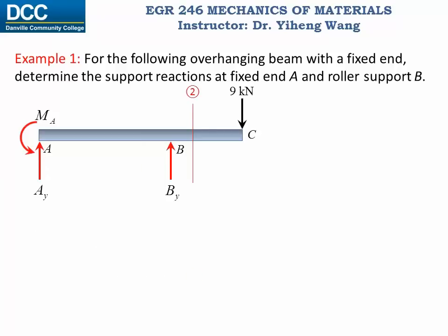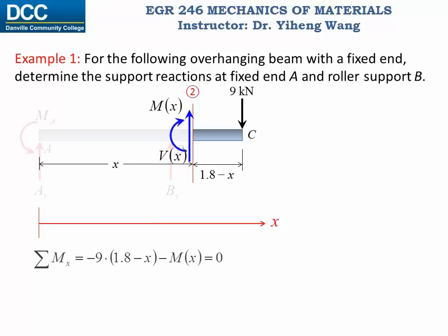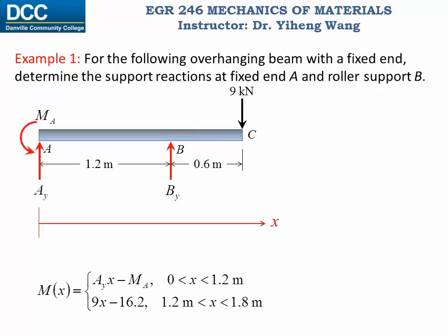For the second section, you can still choose the left segment for analysis, however it might be more convenient to choose the right segment, and we mark the internal shear force and bending moment at this location according to the sign conventions for the right segment. According to the way we set up our x-axis, this arbitrary length is still x, and this length of the right segment is the total length 1.8 meters minus x. For the right segment, we write our moment equilibrium equation and solve for our second equation for the internal bending moment function, which is completely determined. So now we have expressed our internal bending moment function as a piecewise function. The first equation contains the unknown reactions Ay and MA; the second equation does not, which makes this problem a little simpler.